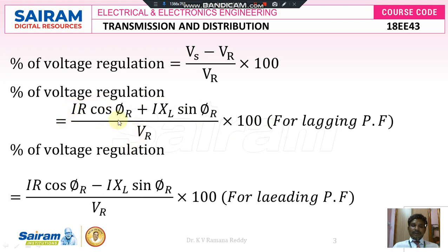This is the case where we write the formula for percentage voltage regulation for an under-voltage problem. But in the case of an over-voltage problem, where we want to bring that over voltage to rated voltage or within specified limits, we have to absorb the reactive voltage. Here we are injecting reactive voltage, represented with a plus sign. For leading power factor, we are absorbing reactive voltage from the existing voltage: IR·cosφr minus I·xl·sinφr divided by Vr. This is the case of bringing over voltage to rated voltage, expressed as minus I·xl·sinφr.